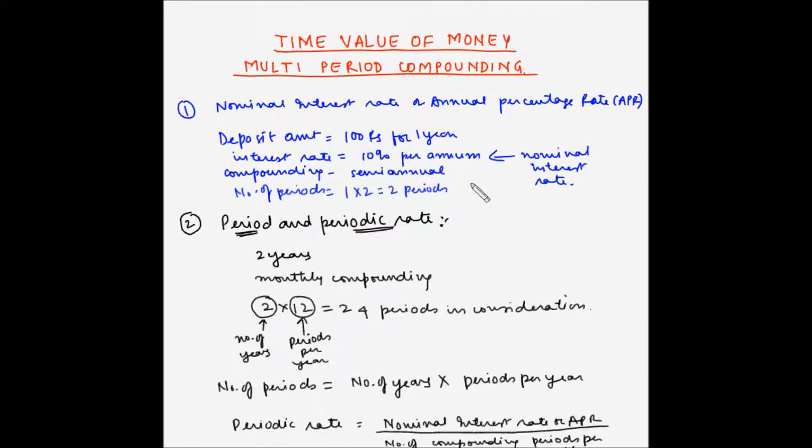So, in our example here, the periodic rate is equal to the nominal interest rate which is 10 divided by the number of compounding periods per year which is 2, so this is 5%.